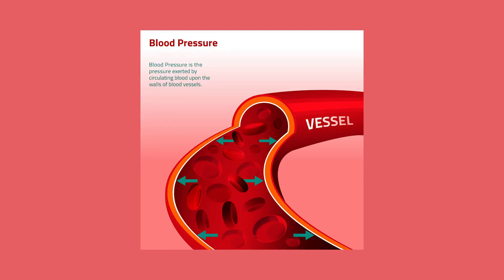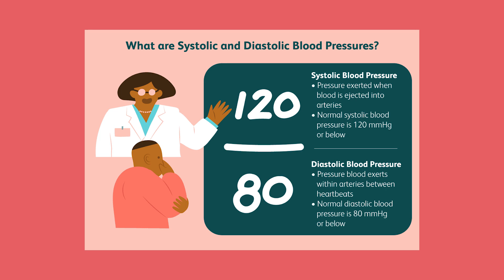All this blood exerts a force on the muscular walls of blood vessels — it is called blood pressure. It rises and falls with the phase of heartbeat. BP increases during systole when the heart contracts to force blood through arteries — this is the systolic blood pressure. When the heart is at rest between beats, BP falls to its lower value — the diastolic pressure.